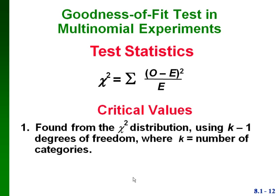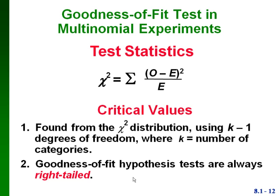Our critical values, if we're using the critical value method, come from the chi-square distribution. For the chi-square distribution you have to use degrees of freedom, like we did with the t distribution. There are going to be k minus 1 degrees of freedom, where k is the number of categories. And goodness of fit tests are always right-tailed.